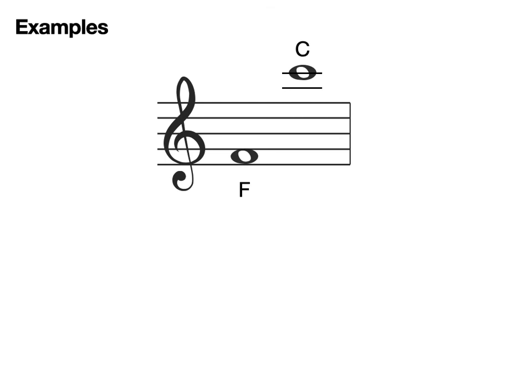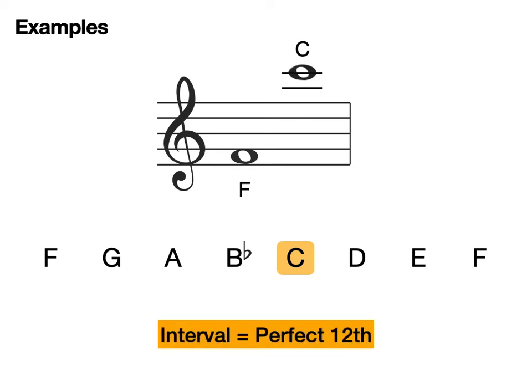So let's do a few examples. What's the distance between these two notes? Let's count up. As you can see, the distance is a twelfth. Then we ask ourselves the same question we would if we had a simple interval. And we ask ourselves, is C natural in F major? And it is. So this is a perfect twelfth.